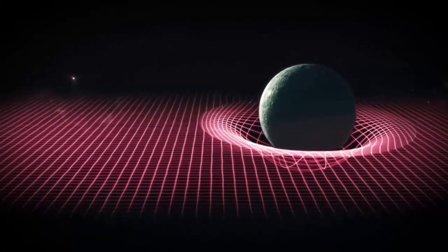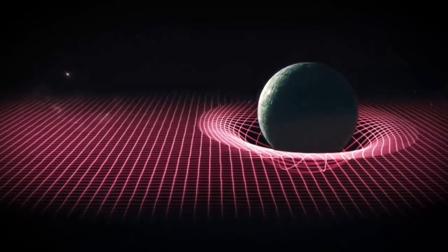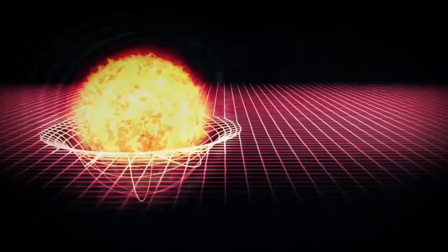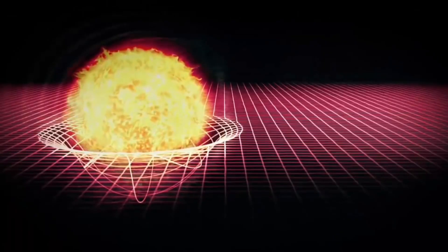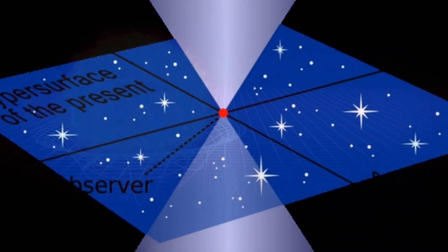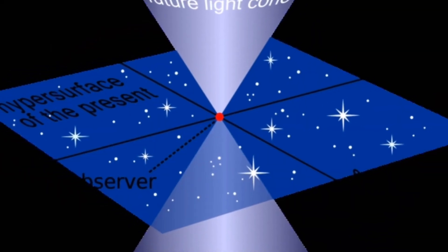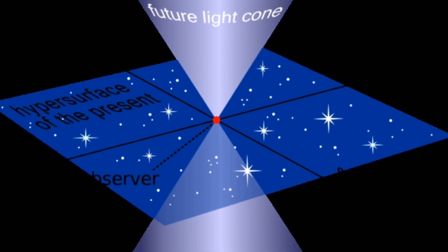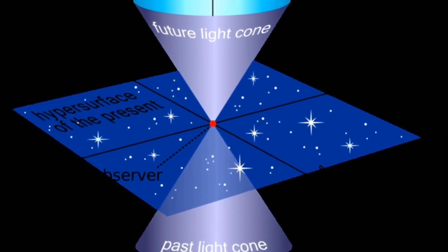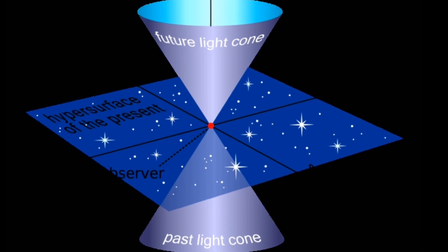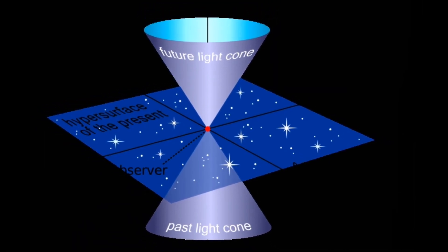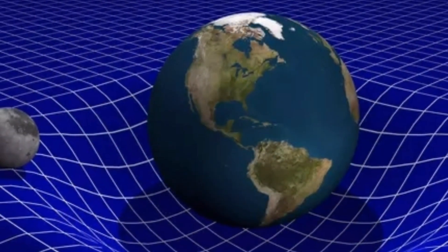So finally, what is space-time? In physics, space-time is any mathematical model that fuses the three dimensions of space and the one dimension of time into a single four-dimensional continuum. Space-time diagrams can be used to visualize relativistic effects, such as why different observers perceive where and when events occur. Space-time is a fundamental requirement to describe any event — without space-time, we cannot measure any event.